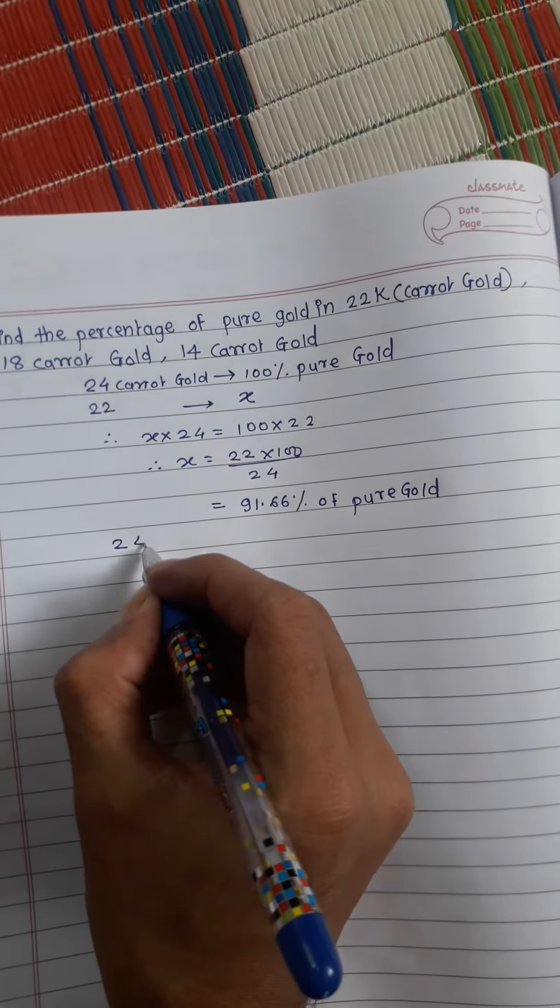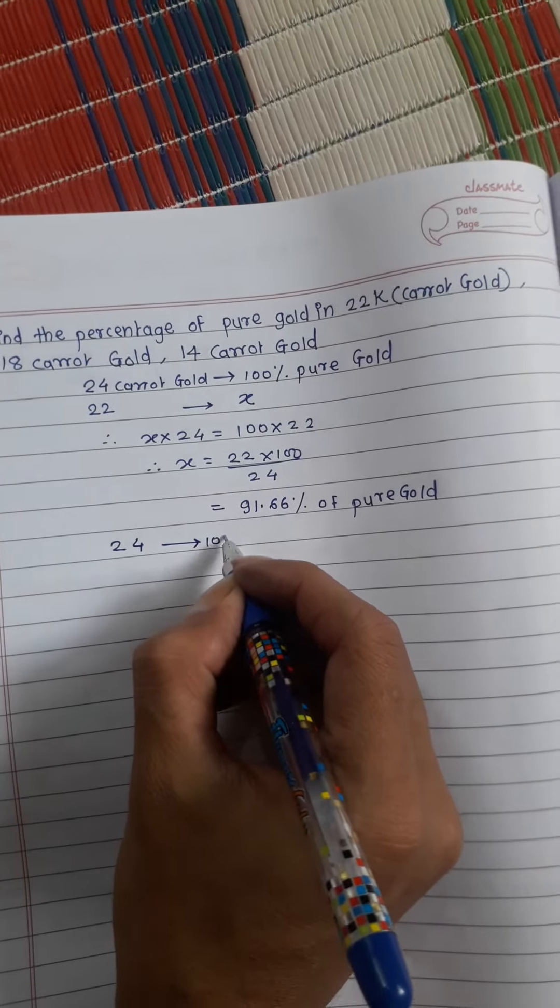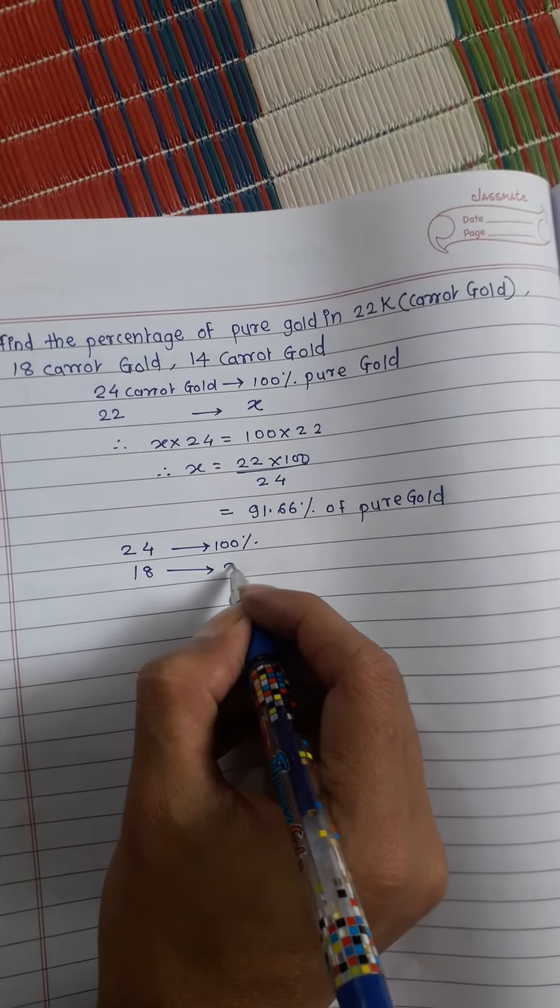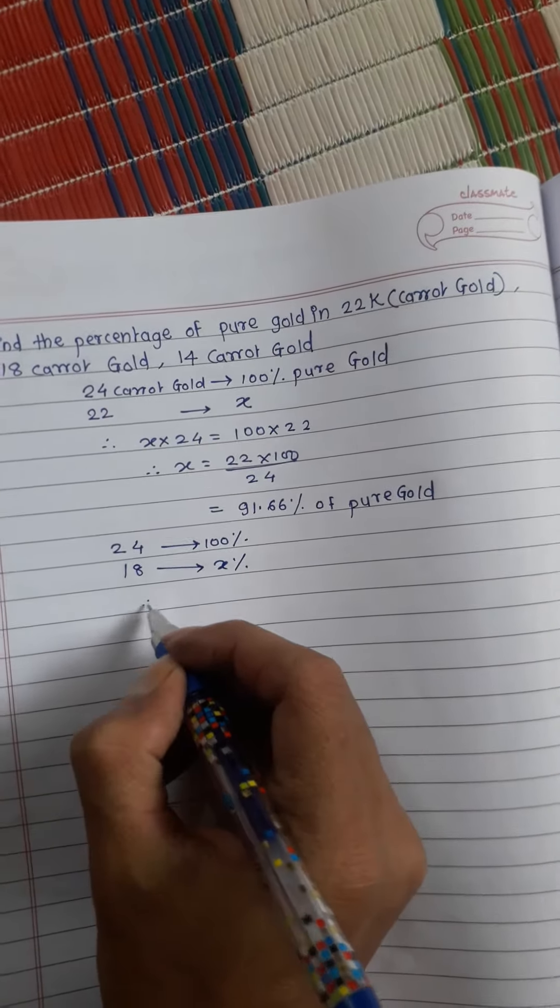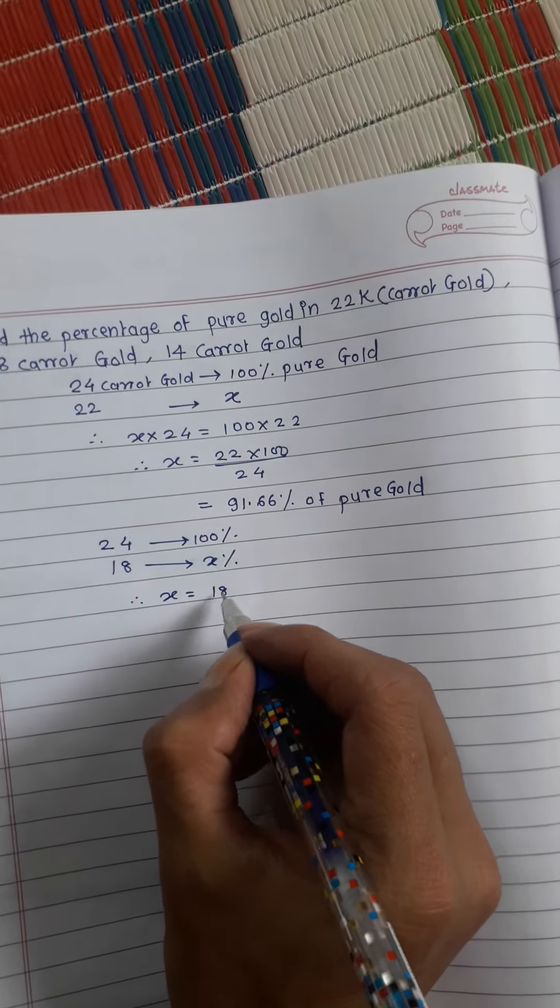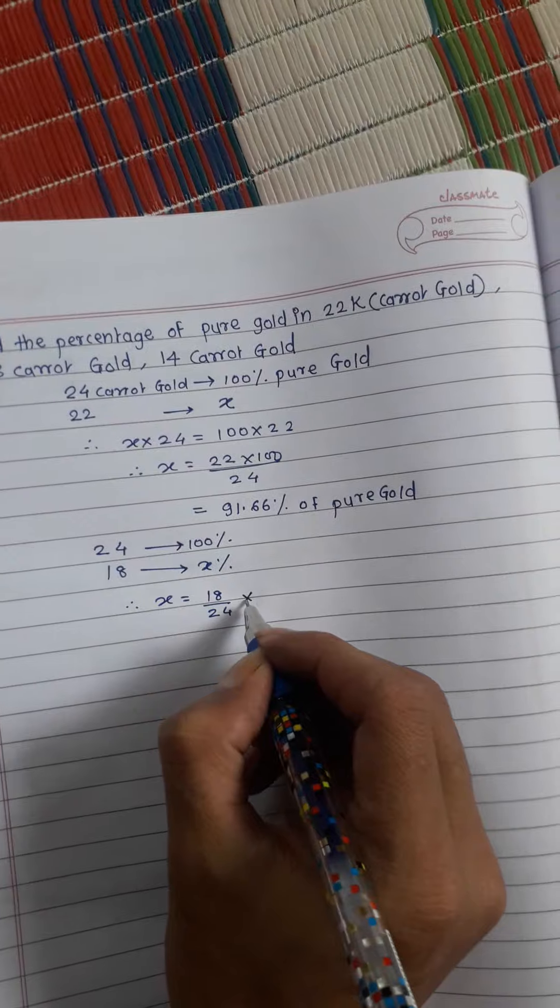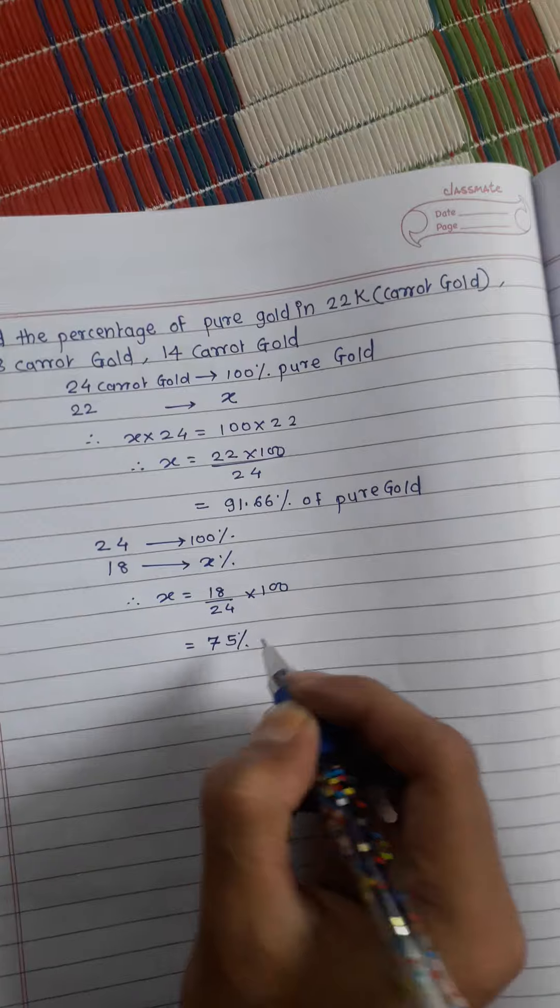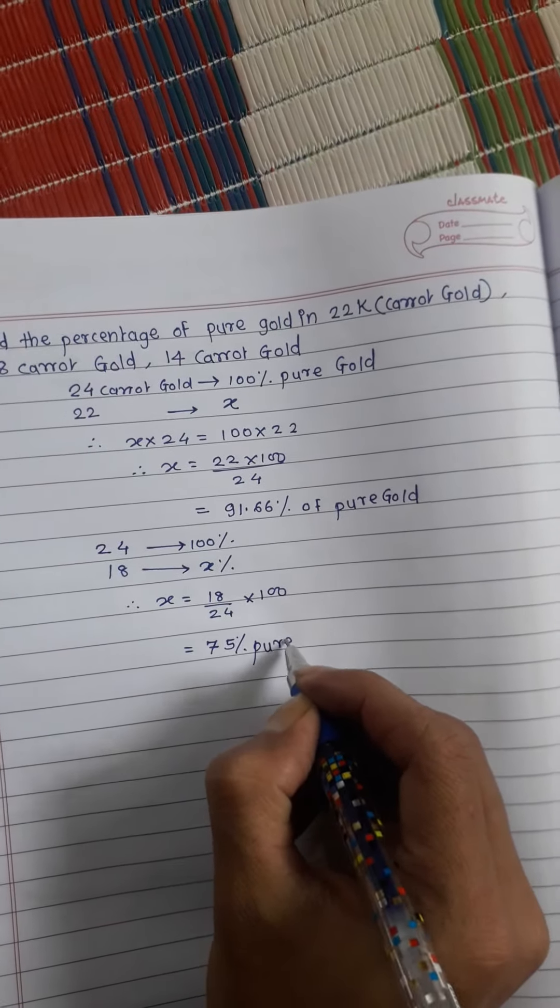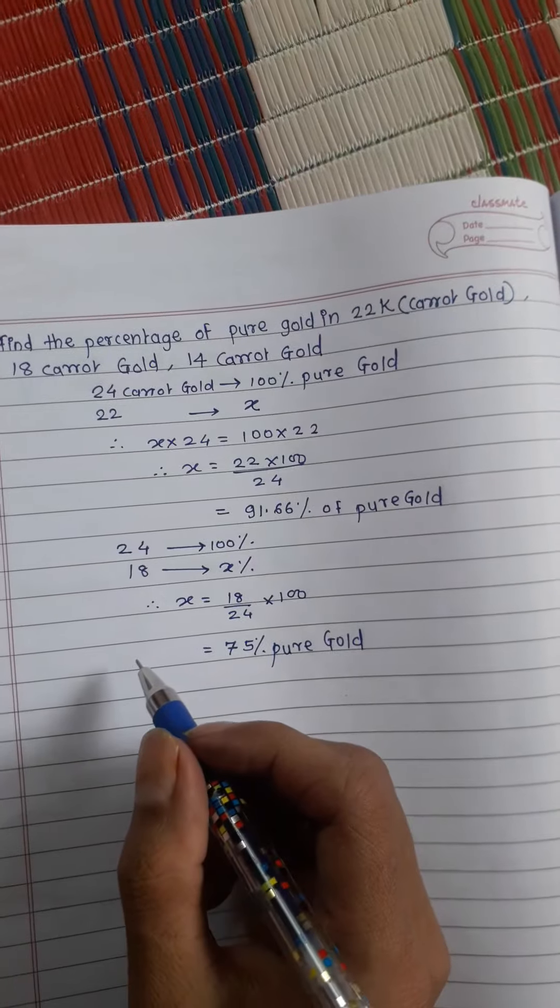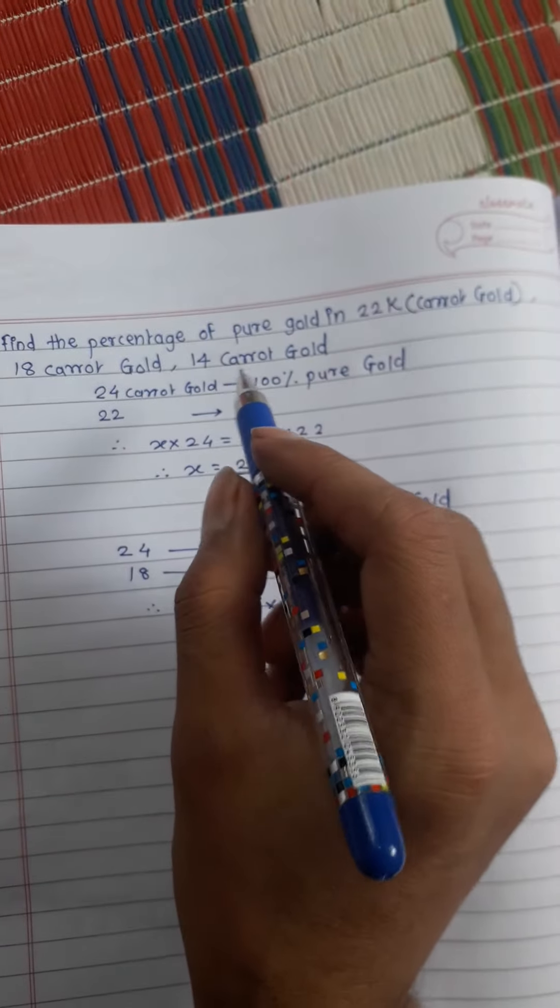Now in the same way we will find the percentage of gold in 18 carat. 24 means hundred percent, for 18 how many percent. Therefore x is equal to 18 divided by 24 multiply by hundred. Therefore it has 75 percent pure gold.